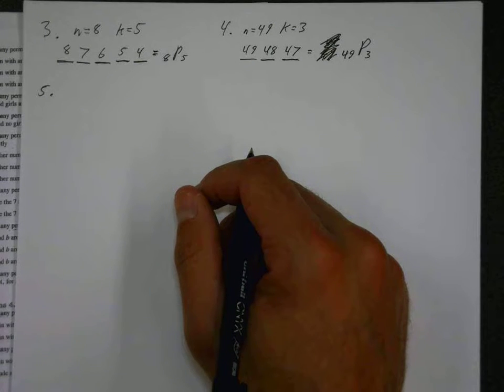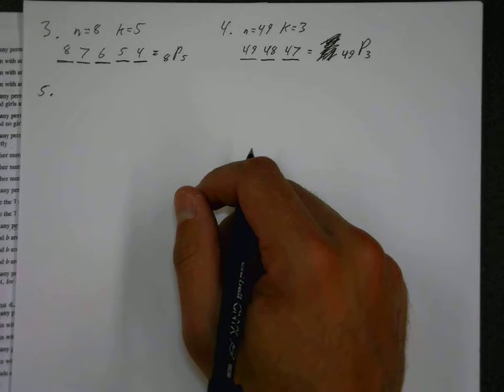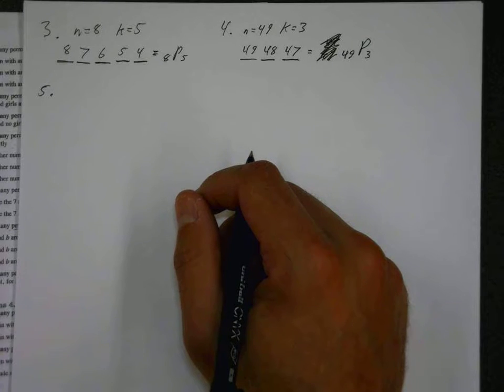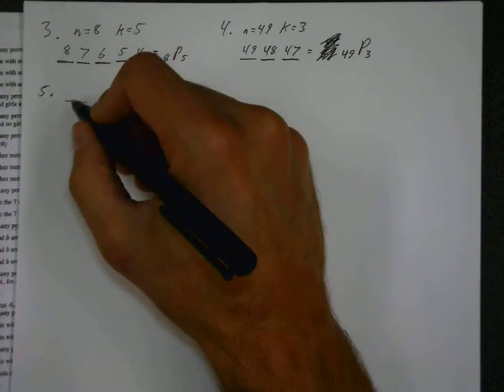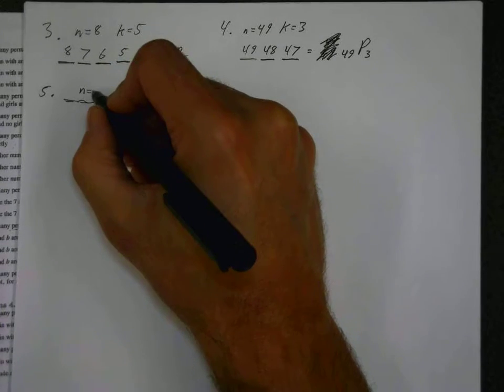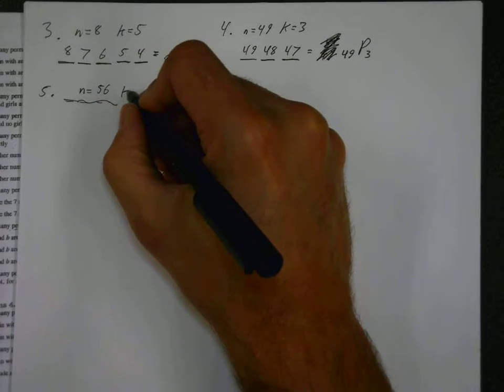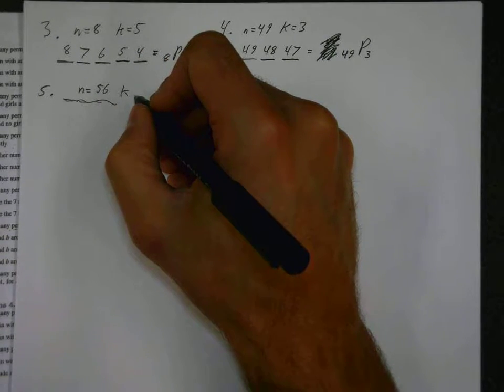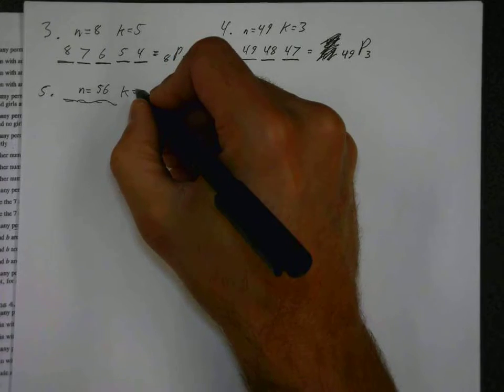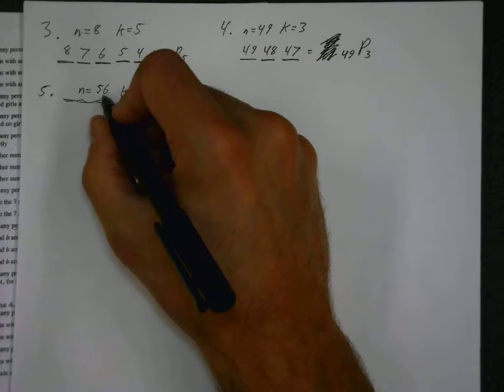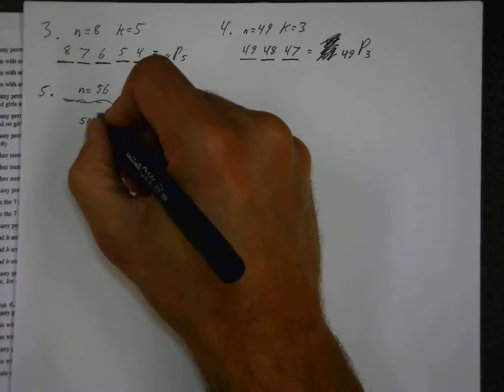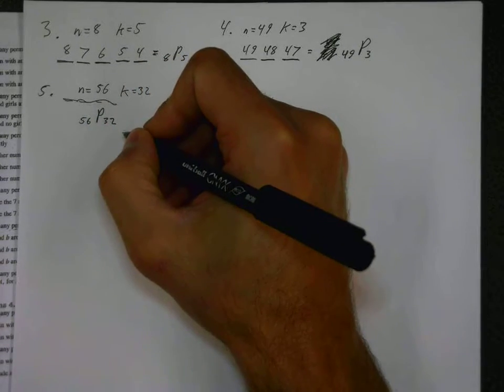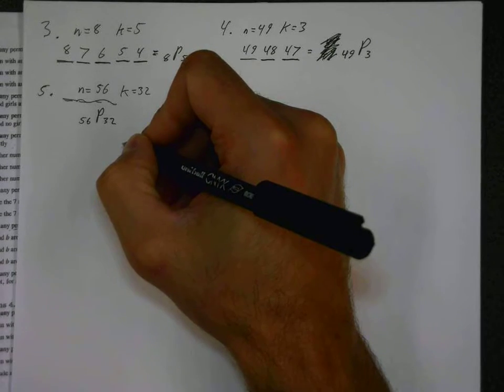Question five. There are 56 possible entrants to a car race. Only 32 cars are allowed in the race, with the 32 positions decided in order by the fastest times. How many starting orders could the race have? Well, I am not gonna do all the seats in this one. N is equal to 56, and K is going to be equal to 32. So there's 32 seats. 56 could possibly go in there. So this one is going to be 56P32.